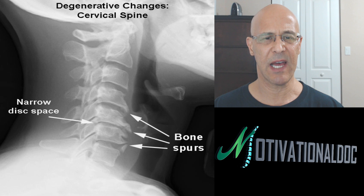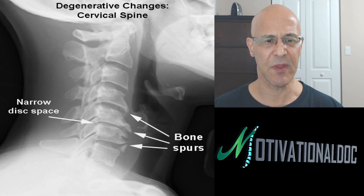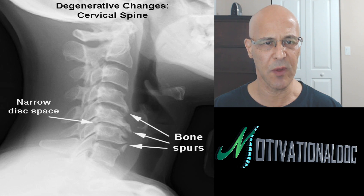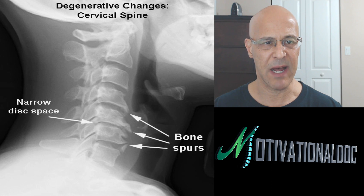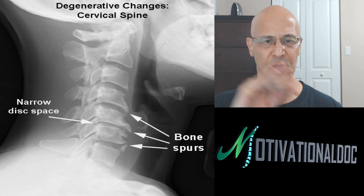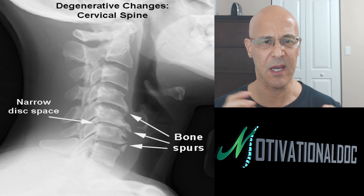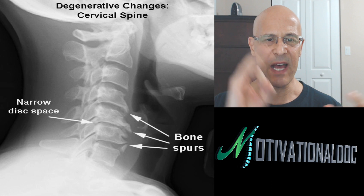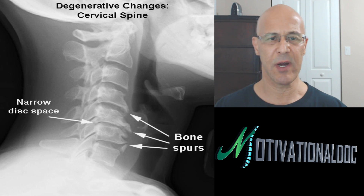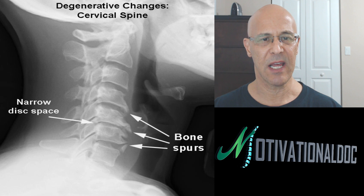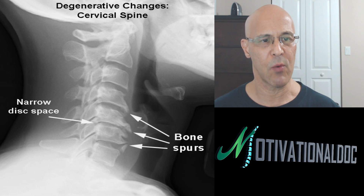Anytime we have degeneration or changes occurring within the joints or the bones — it could be the front of the vertebral bodies, behind the bodies, the facet joints, anywhere, particularly even the intervertebral foramen — those joints can degenerate. And I'm going to tell you how and why.